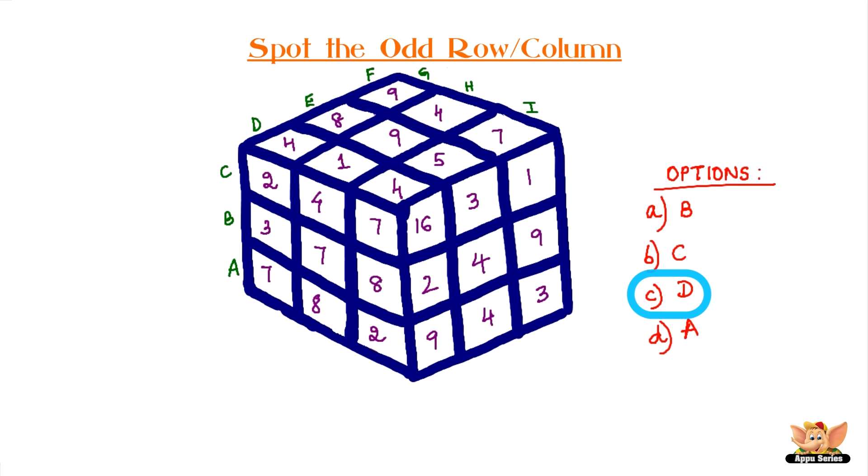Answer is C: D. D adds up to 36, the others add up to 33.